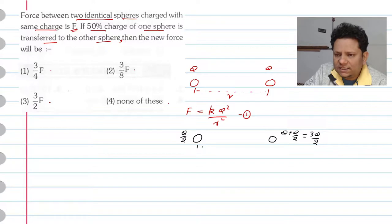And we keep their distance the same. So in this case, the new force F' will be equal to K times Q/2 multiplied by 3Q/2 divided by R².